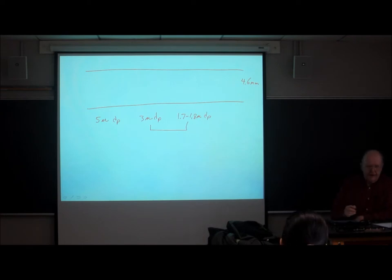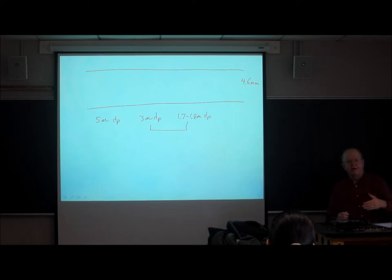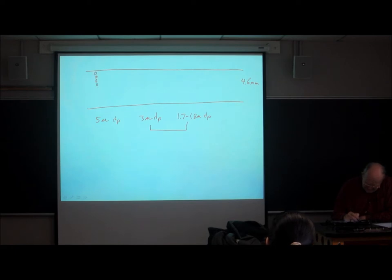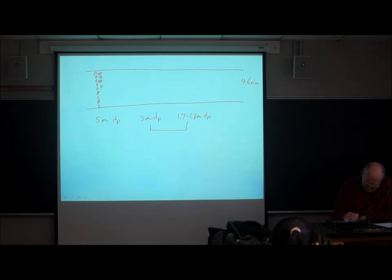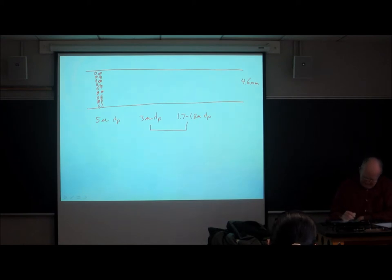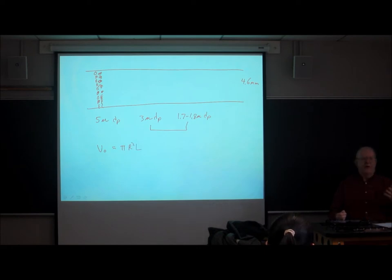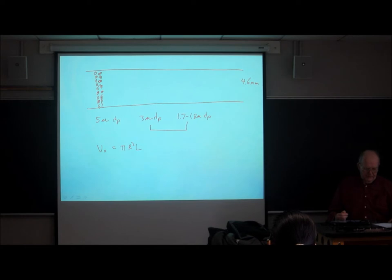The column is packed with these small particles — that means there are several thousand particles across the inner diameter. The volume of the unpacked tube is just pi R squared L, but this volume is not what's important. There are a number of volumes that matter.